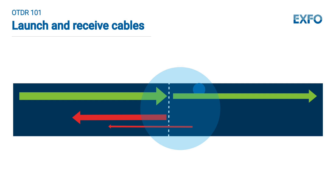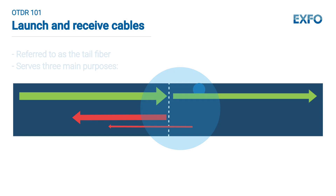The launch cable essentially acts as an extension of the OTDR and helps to ensure that the OTDR measurements accurately reflect the true characteristics of the fiber under test.